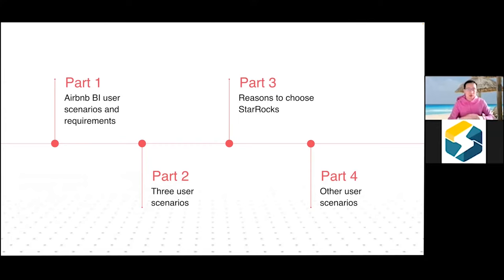The presentation will be divided into four parts. First, we'll look at what BI scenarios look like in general and what the main requirements are. Then we'll go over three Airbnb-specific scenarios we're currently working on. We'll explain the reasons behind our choice of using StarRocks. And at the end, we'll look at future opportunities — many scenarios where we think we can leverage StarRocks.